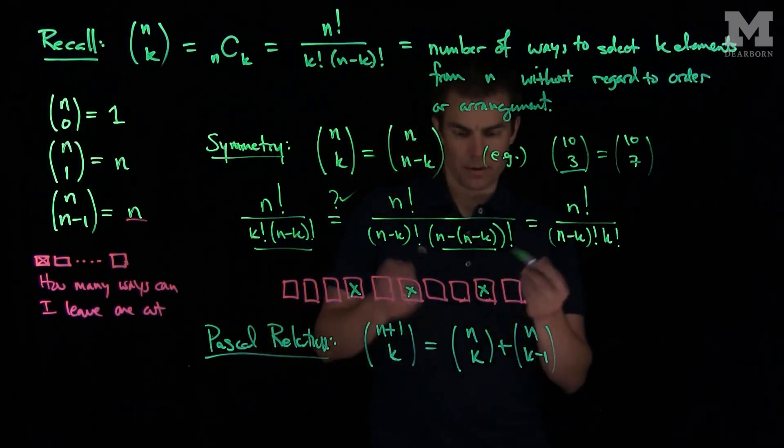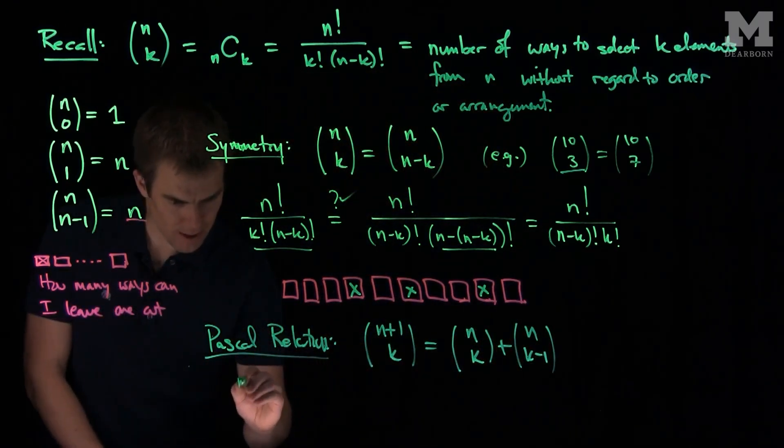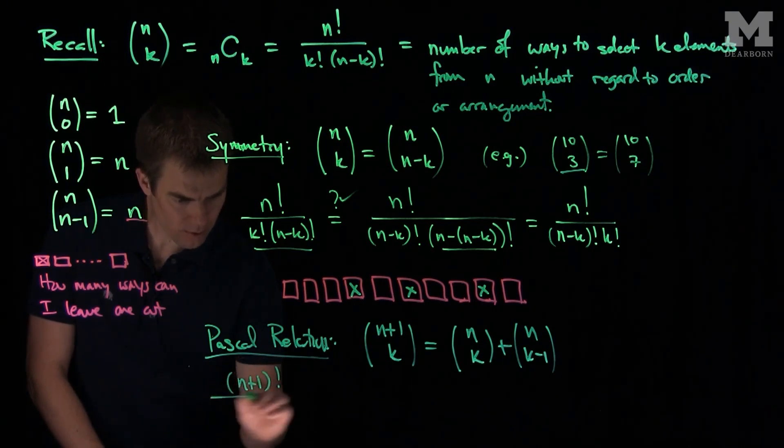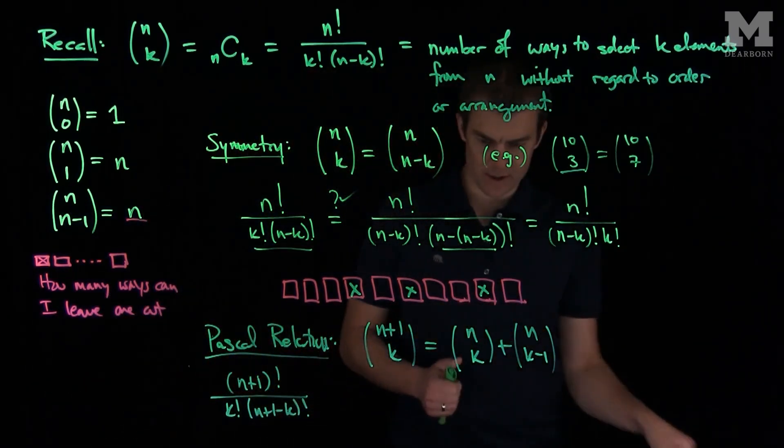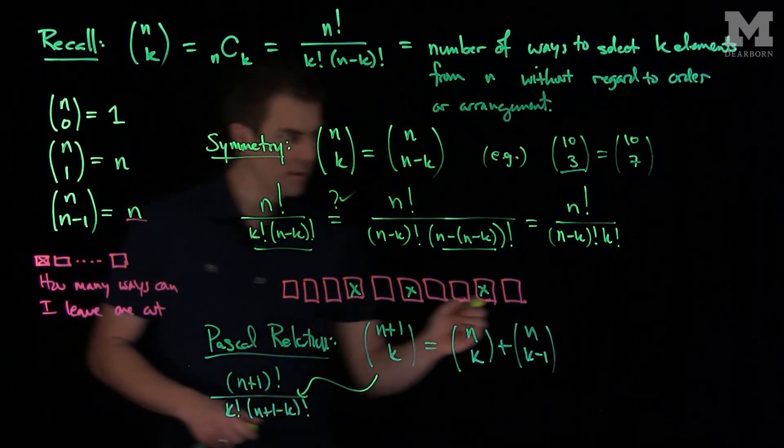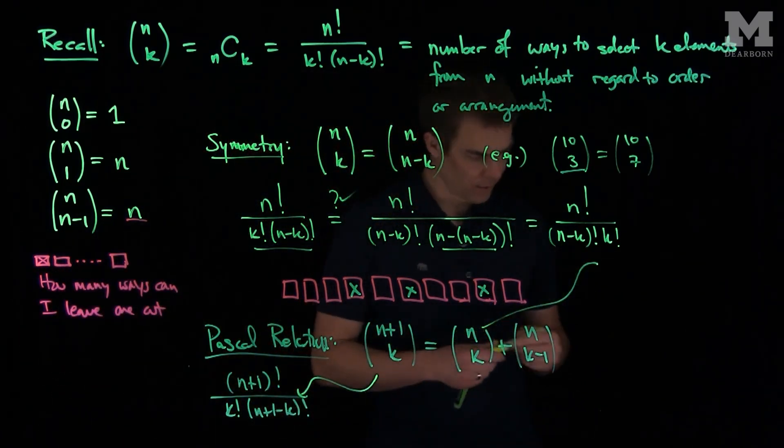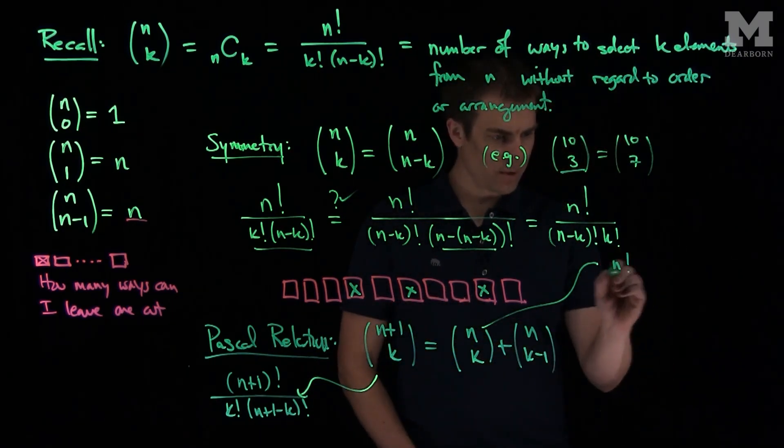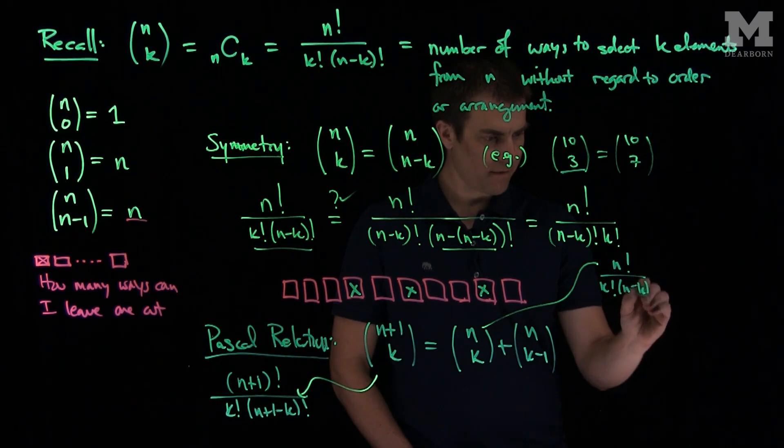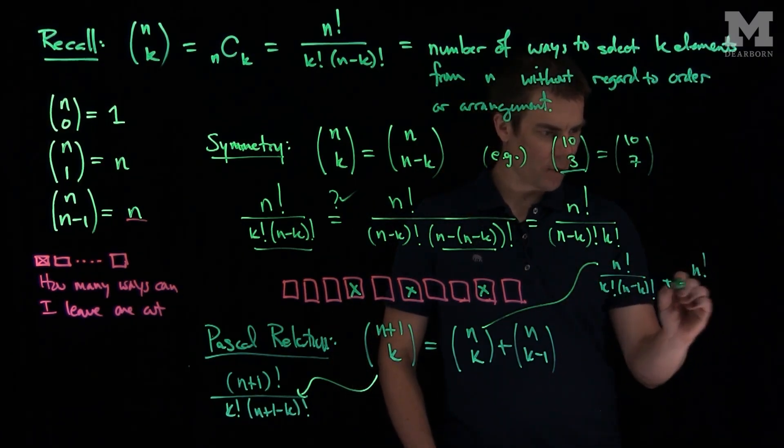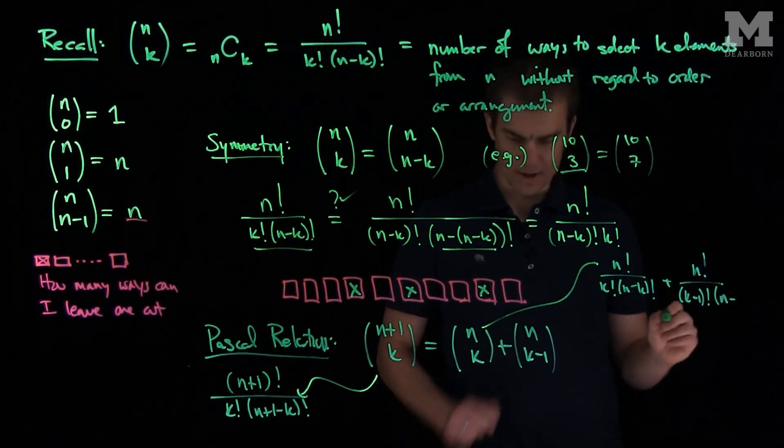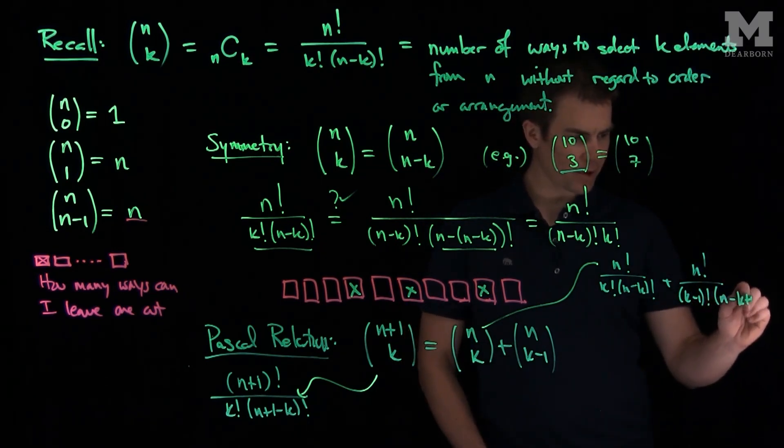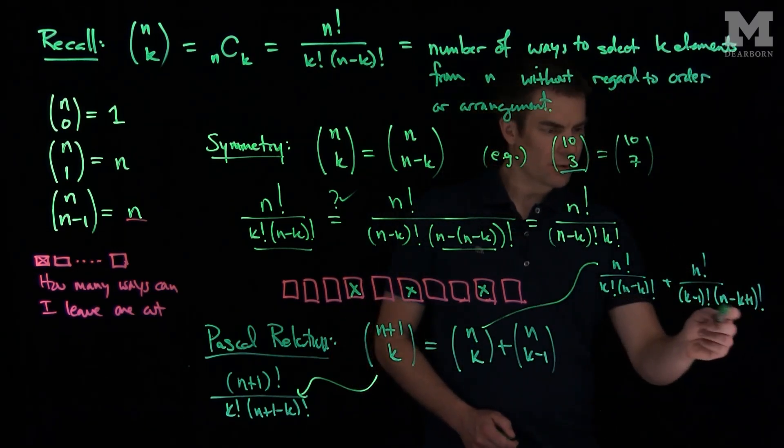And if we think about it, we can verify this by writing this out. So this will be (n+1) factorial over k factorial times (n+1-k) factorial. And over here, this is n factorial over k factorial times (n-k) factorial. And this will be n factorial over (k-1) factorial times (n-k+1) factorial. And now we see we have an extra term, so we can get a common denominator.